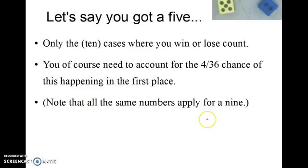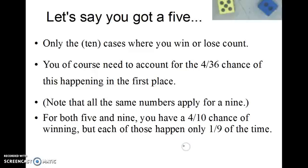So the same numbers, by the way, apply if I threw a nine the first time. And because that table of numbers I had for what happens on the two dice was symmetric about a particular diagonal, everything that applies for a five applies for a nine. Everything that applies for a four applies for a ten. And everything that applies for a six also applies for an eight. For both five and nine, you have a 4 in 10 chance of winning. But each happens one-ninth of the time.